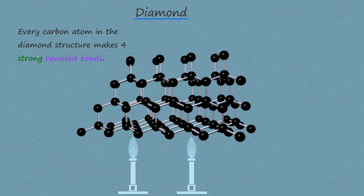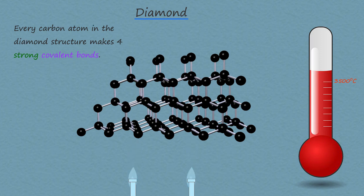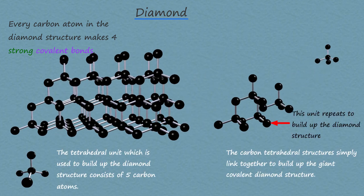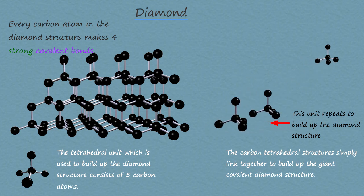To melt diamond, you would have to break all these strong covalent bonds, and this would require a very large amount of energy. To melt a diamond, you would have to heat it to a temperature in excess of three and a half thousand degrees Celsius. The diamond structure is a crystalline structure, built up with lots of small tetrahedral units consisting of five carbon atoms, which simply link together to form the giant covalent structure.